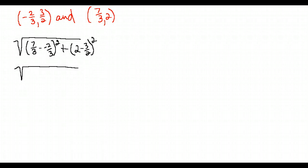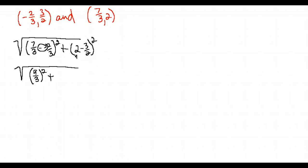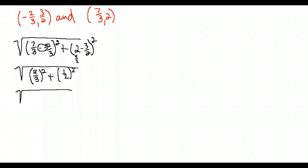Seven thirds minus negative two thirds — they have a common denominator, and subtracting the negative makes it a plus — so we have seven thirds plus two thirds, which gives nine thirds. Nine thirds simplifies to three. For the y part, two minus three halves: two is the same as four halves, so four halves minus three halves is one half. We square both: three squared is nine, and one half squared is one fourth.